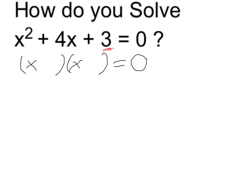I want to look at the constant term, and I want to find factors of the constant term which add up to the x term. 3 can be factored only as 3 and 1, and 3 plus 1 does add up to 4.